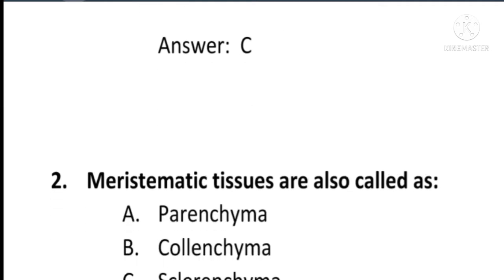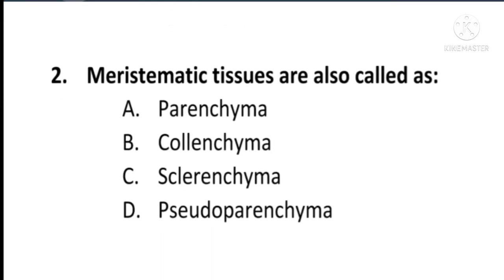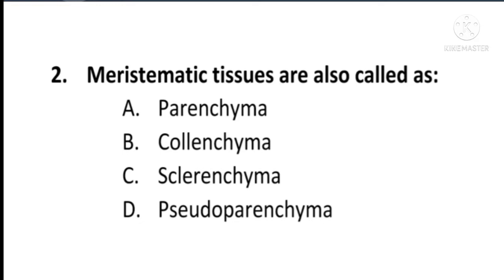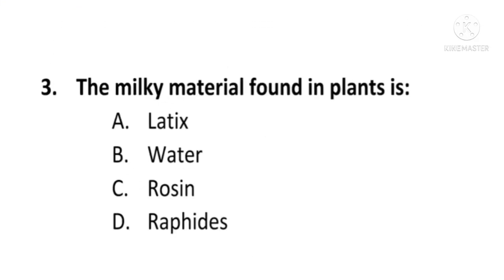Next question: Meristematic tissues are also called as — A) Parenchyma, B) Collenchyma, C) Sclerenchyma, or D) Pseudoparenchyma. The correct option is D, Pseudoparenchyma. Meristematic tissues are also called as Pseudoparenchyma; D is the correct option.